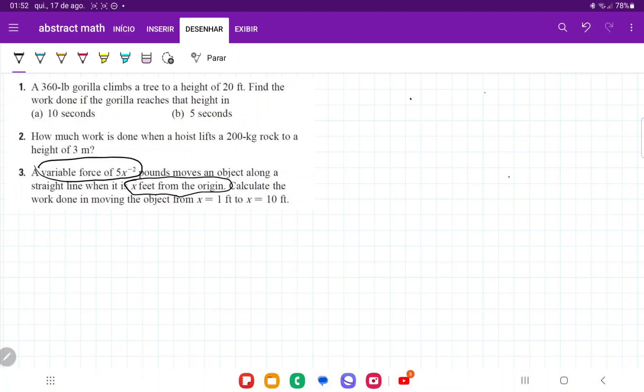And so it is asking us to calculate the work done. So work is equal to force times distance. However, we can't just multiply force times distance because the force changes. The force is a function of distance.